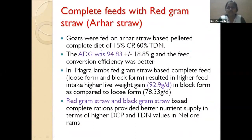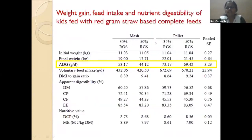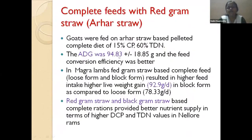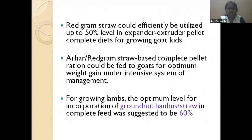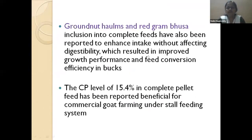Red gram straw (arhar straw) at 35 to 50% inclusion — in both pellet and mash forms — gave an ADG of around 94 to 95 grams in Nellore lamb circuits. Thus, up to 50% red gram straw can be included in lamb diets, and it can be processed into pellets. Groundnut haulms have higher crude protein content, so they can be included up to 60% in complete rations. Groundnut haulms and red gram busa in combination can also be fed to goats and lambs efficiently.